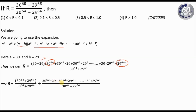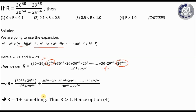The remaining terms are 30 to the power 63 times 29, plus 30 to the power 62 times 29 squared, and so on, down to 30 times 29 to the power 63. So the whole bracket is split into two parts. The first part — 30 to the power 64 plus 29 to the power 64 divided by itself — gives 1. The second part is some positive non-zero value. So we get 1 plus something positive, which is definitely greater than 1. Thus r is greater than 1, and the answer is the fourth option.